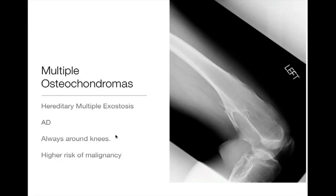Radiographically, we can look at the cartilaginous cap on CT or MRI. As patients go into adulthood, the cartilage cap tends to regress and go away. If that cartilaginous cap is quite large — people use a threshold of about 2 centimeters — we start worrying about malignant degeneration. Multiple osteochondromas is an autosomal dominant syndrome with a higher risk of malignant degeneration, so these patients are often placed in a surveillance program.